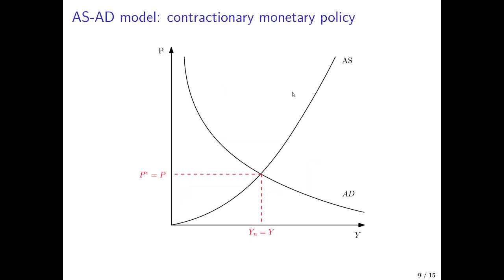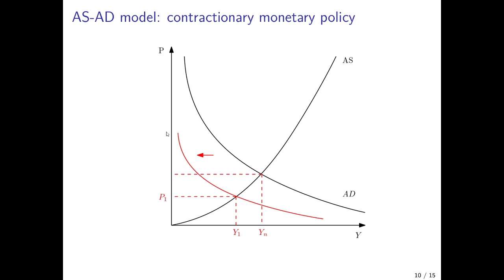Now we look at the opposite case — a contractionary policy. Assume the central bank wants to pursue disinflationary policies. The central bank would increase the interest rate, affecting the LM curve, and therefore the AD curve would shift to the left. We would have lower demand in equilibrium, with a short run equilibrium in which actual output and income are below the natural level, and the price level is below price expectations.